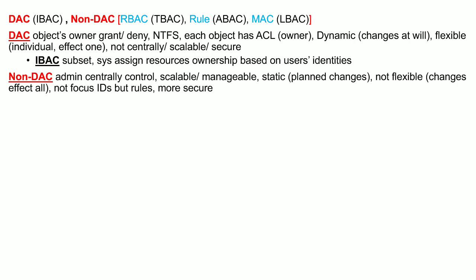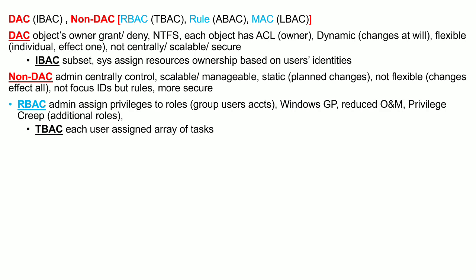In non-discretionary access control, changes are planned centrally depending upon the security requirements of the organization. The model is not very flexible because one change will affect the entire environment, unlike discretionary access control where a change only impacts a particular object. These models do not focus on user identities but on rules, making them more secure than discretionary access control models.